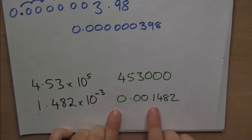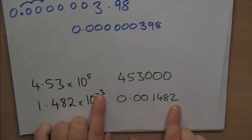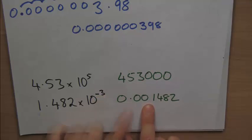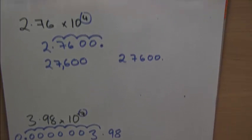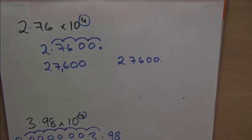Second one, we should have got 0.001482. Now, it's negative, so that tells us how many 0's need to be in front. 1, 2, 3. Decimal point there. And done. So that's how we convert numbers from standard form into normal numbers.